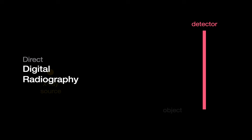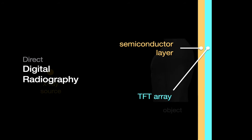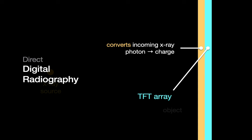With direct DR, a single semiconductor layer replaces the phosphorescent crystal and photodiode layers. Whenever an incoming x-ray photon hits a spot on the semiconductor layer, that event is immediately converted to an electric charge that the TFT panel registers as a black pixel at the corresponding spot. One of the benefits of DR portable chest radiography over CR is that the image is directly created within the detector panel and there's no need for an intervening laser scanning step.